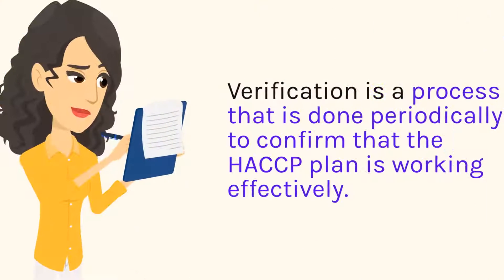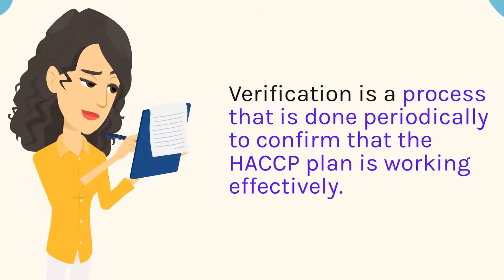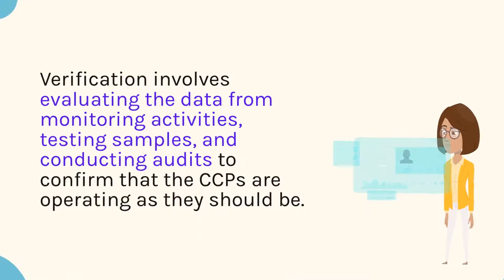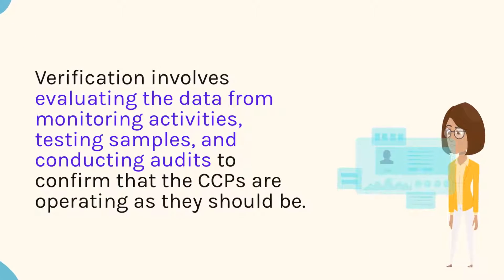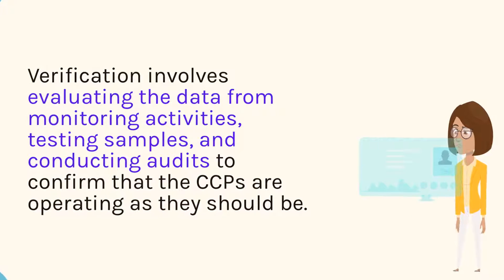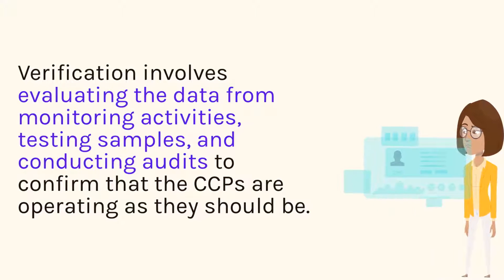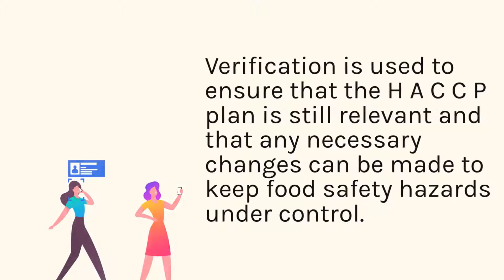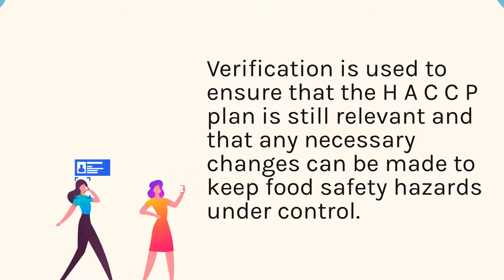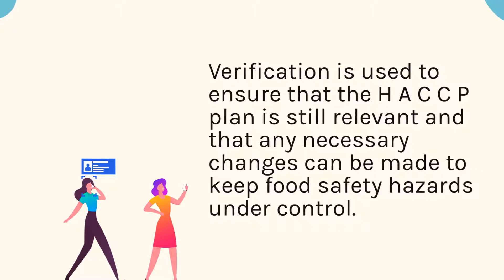Verification is a process that is done periodically to confirm that the HACCP plan is working effectively. Verification involves evaluating the data from monitoring activities, testing samples, and conducting audits to confirm that the CCPs are operating. Verification is used to ensure that the HACCP plan is still relevant and that any necessary changes can be made to keep food safety hazards under control.